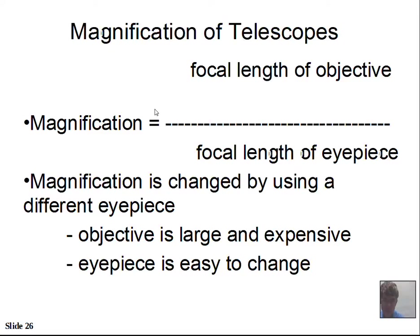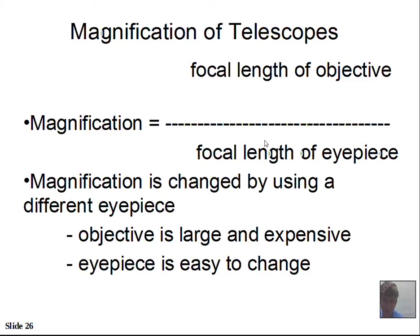Magnification is easy to calculate. Lenses bring light to a focus at a certain distance called the focal length. The focal length of the objective divided by the focal length of the eyepiece gives you the magnification. For example, if the objective focal length is 60 cm and the eyepiece is 3 cm, 60 divided by 3 gives magnification of 20. If the objective is 100 cm and the eyepiece is 10 cm, magnification is 10. Changing the eyepiece to 5 cm gives 100 divided by 5, or magnification of 20.